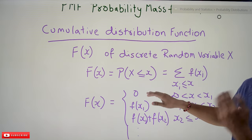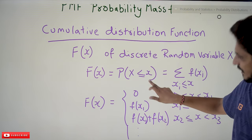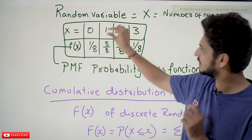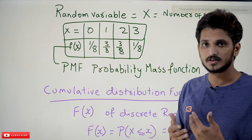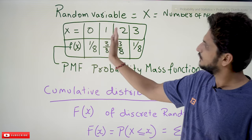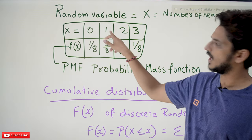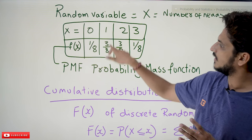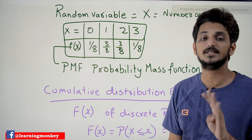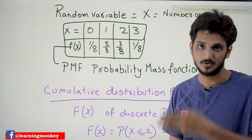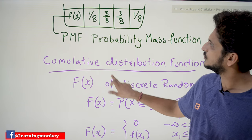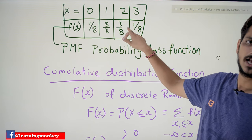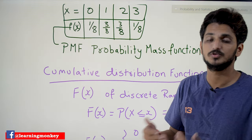Why P(X ≤ x)? Cumulative means previous values should be added. For example, if you want to calculate the cumulative distribution function for the value 1, previously we have values 0 and 1, so we add all their probabilities: probability of 0 is 1/8, probability of 1 is 3/8, so 1/8 + 3/8 = 4/8. So F(1) = 4/8. Similarly F(2) = 1/8 + 3/8 + 3/8 = 7/8.